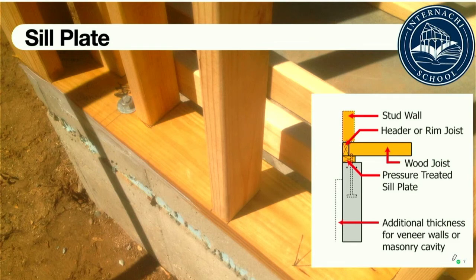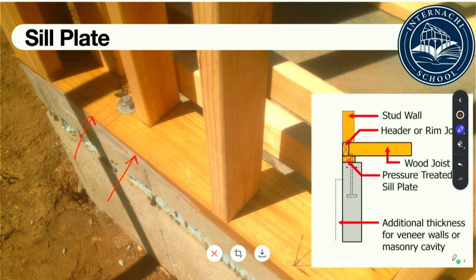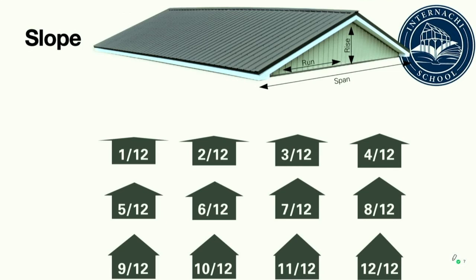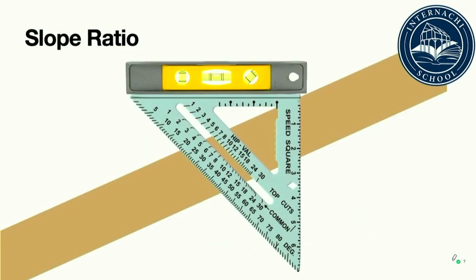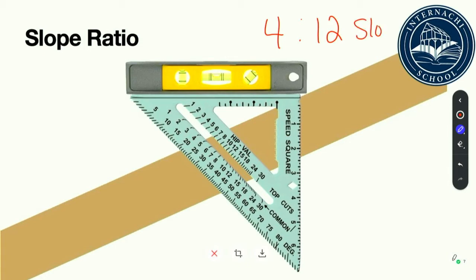The first course of horizontal lumber placed on top of and attached to the foundation wall is known as the sill plate. Slope is the incline of the roof expressed as a ratio of the vertical rise to the horizontal run, always expressed as inches per foot. A roof that rises 4 inches for every 12 inches of run has a 4-in-12 slope. If the rise is 6 inches for every 12 inches of run, then the roof slope is 6-in-12.